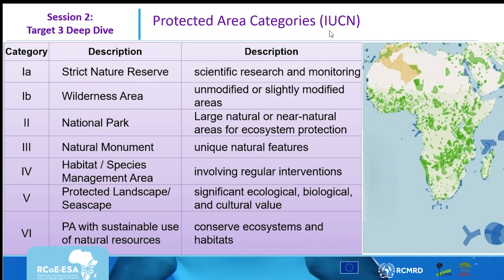IUCN has categorized protected areas into seven categories. The first category is Category 1A — strict nature reserves. These are areas where there is very minimal human interference and they are very much restricted. They are only allowed for scientific research and monitoring.